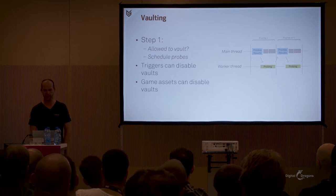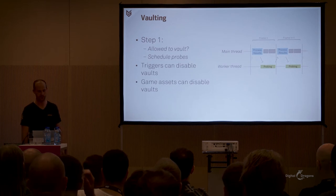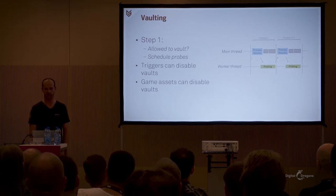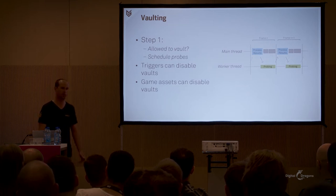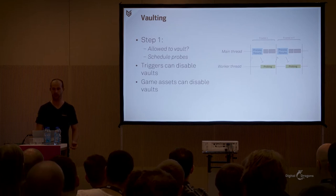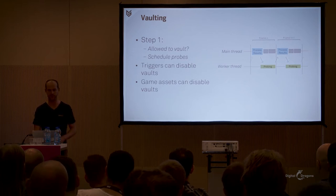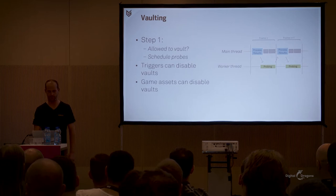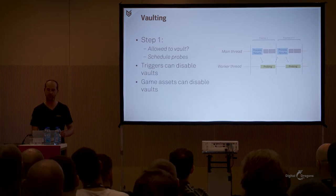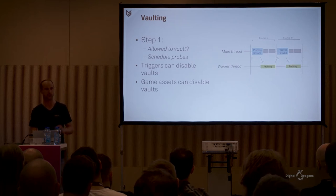In the Vault System, the first step is to see if we are actually allowed to vault. Our level designers can disable vaulting in certain gameplay areas by placing trigger volumes. Individual game assets can also be marked as not vaultable — for example, a table with a pickup on top of it. If the player is allowed to vault, we start by scheduling collision probes. To prevent wasting precious cycles while waiting for probe results, we decided to probe async — the probes are scheduled to execute on different threads later in the frame. However, this means probe results lag one frame.